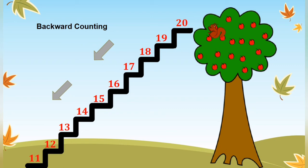Let us start counting backwards from 20 to 11. Children, you are going to say numbers with me. So, 20, 19, 18, 17, 16, 15, 14, 13, 12, and 11.